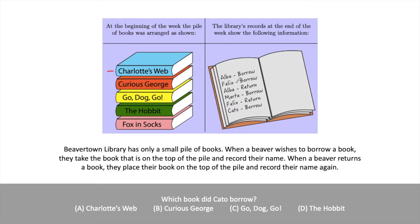Now Felix borrows a book. Because Charlotte's Web is no longer in the stack, there are only four books — Curious George, Go Dog Go, The Hobbit, and Fox and Socks. Felix would borrow the second book, which is Curious George, because that's now the book on top.